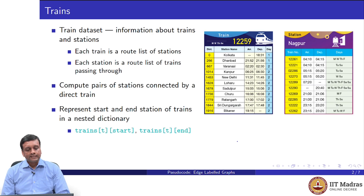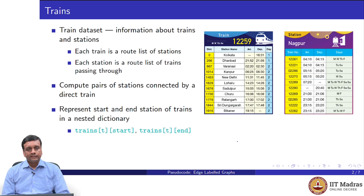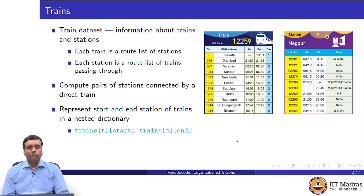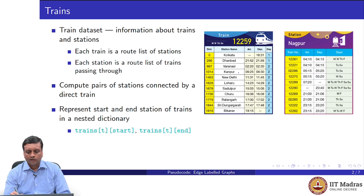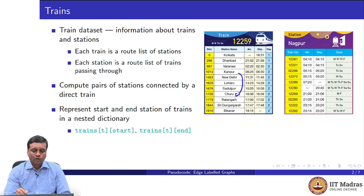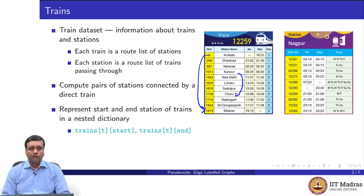Let us go back to the trains dataset. We have train cards and station cards. What we said was that we would try to represent in a graph all pairs of stations which are connected by a direct train. A direct train would connect the starting point and the ending point — for example, we would only allow Kolkata to Bikaner to be a direct connection for such a train, not Kanpur to Churu.